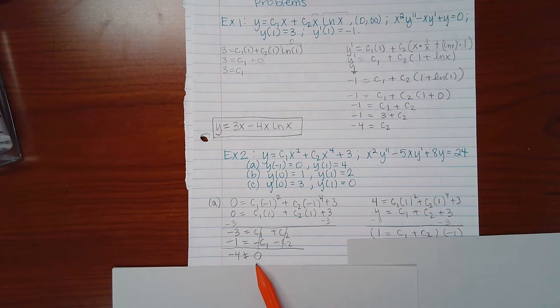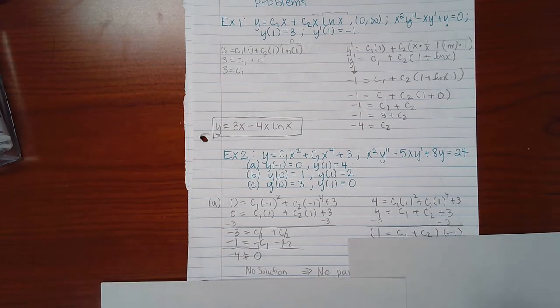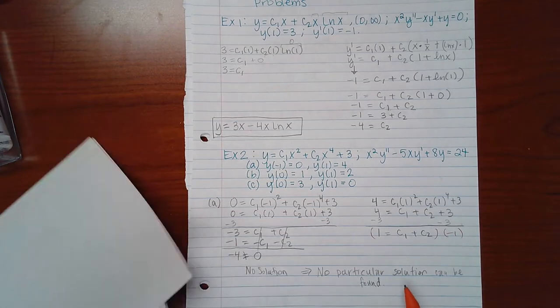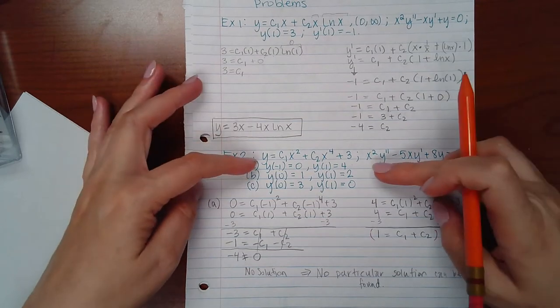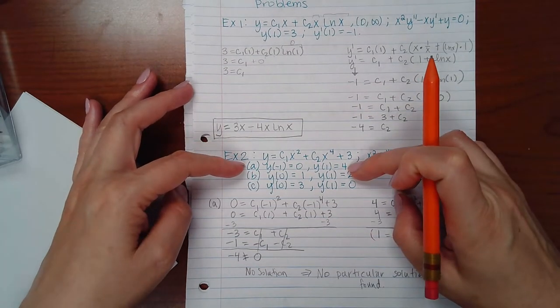But negative 4 does not equal 0, which means there is no solution to this system. Which means there's no particular solution for this DE, okay, with these boundary values.